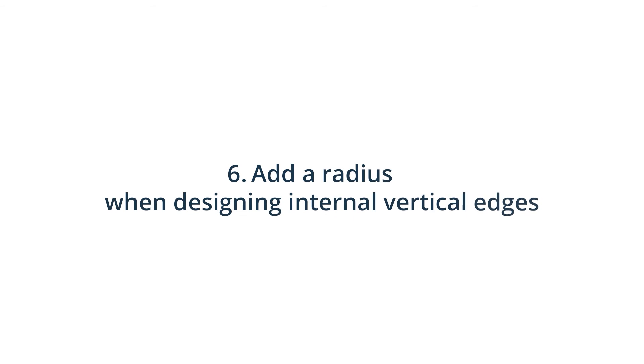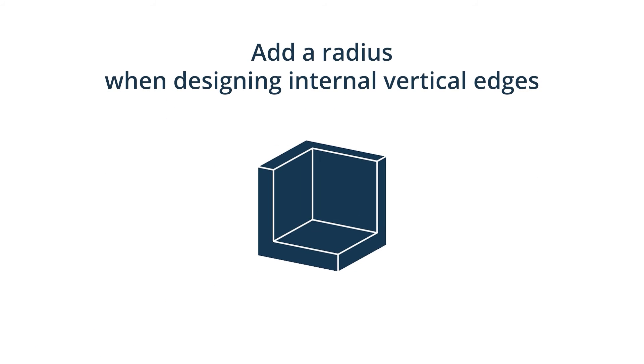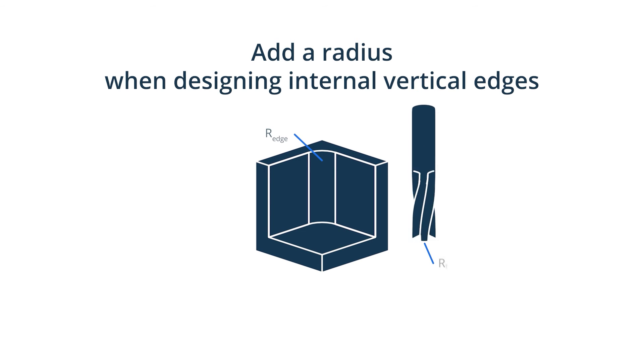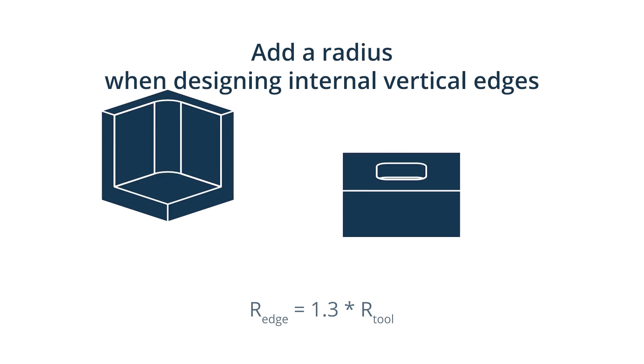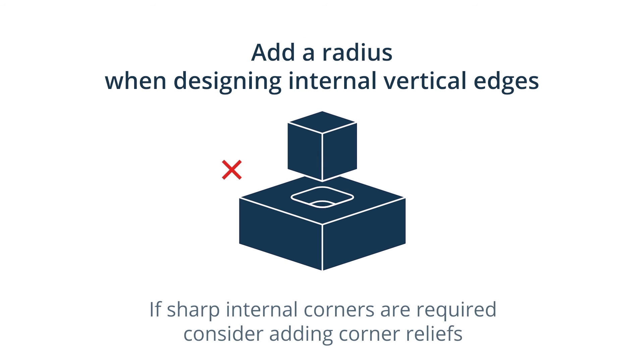6. Add a radius when designing internal vertical edges. Most cutting tools are cylindrical and cannot machine sharp internal edges, meaning it is important to add a radius to internal edges in your design. To avoid unnecessary wear and tear of the tool, a good rule of thumb is to add a radius of 130% of the milling tool radius. If you need sharp internal corners, consider adding undercuts instead of reducing the edge radius.